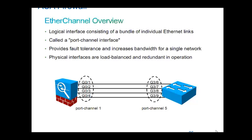EtherChannel on the firewall, EtherChannel on the ASA device. EtherChannel is an aggregation of links — bundling links for redundancy and load balancing. This is a very common, popular technology used in the distribution layer or aggregation layer where a lot of segments are connected, a lot of access layer devices are connected, and a lot of bandwidth between devices is needed. Wherever we need more bandwidth than the capable bandwidth on an interface, we need to bundle interfaces to get more bandwidth.